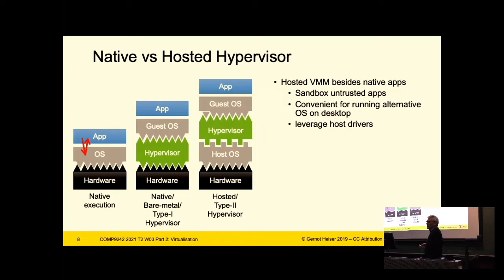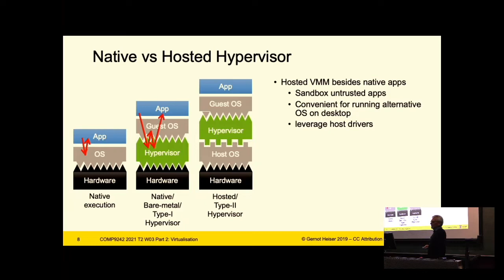The return from exception is also a privileged instruction, so it needs to trap back into the hypervisor, which reflects it back up to the application. This looks very much like what we do in a microkernel — when you invoke a system service. There are a lot of similarities between hypervisors and microkernels. I won't discuss that today, but sometime later in the term.